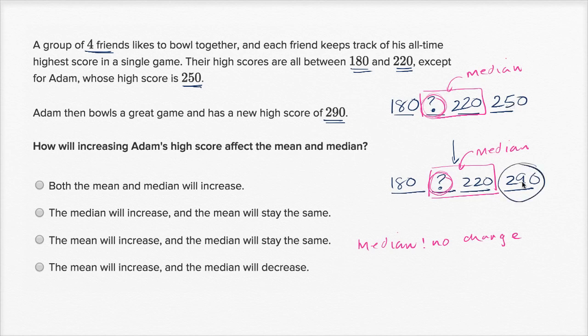So if you take these four and divide by four, you're going to have a larger value than if you take these four and divide by four because their sum is going to be larger. And so the mean is going to go up. The mean will increase.